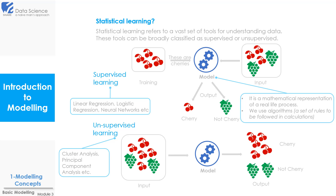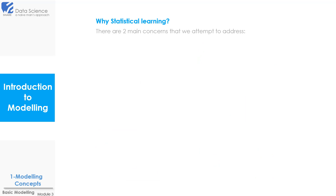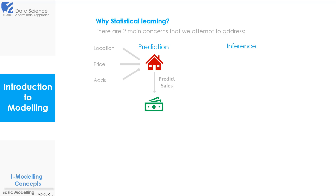So this was statistical learning in brief. Now the next question is: why do we need statistical learning? Basically there are two reasons — either we are making predictions from our data, or we are trying to draw inferences from it. Now let's say we have our input variables for selling a house. The input variables are location, price, expense on advertisement in different media, etc.